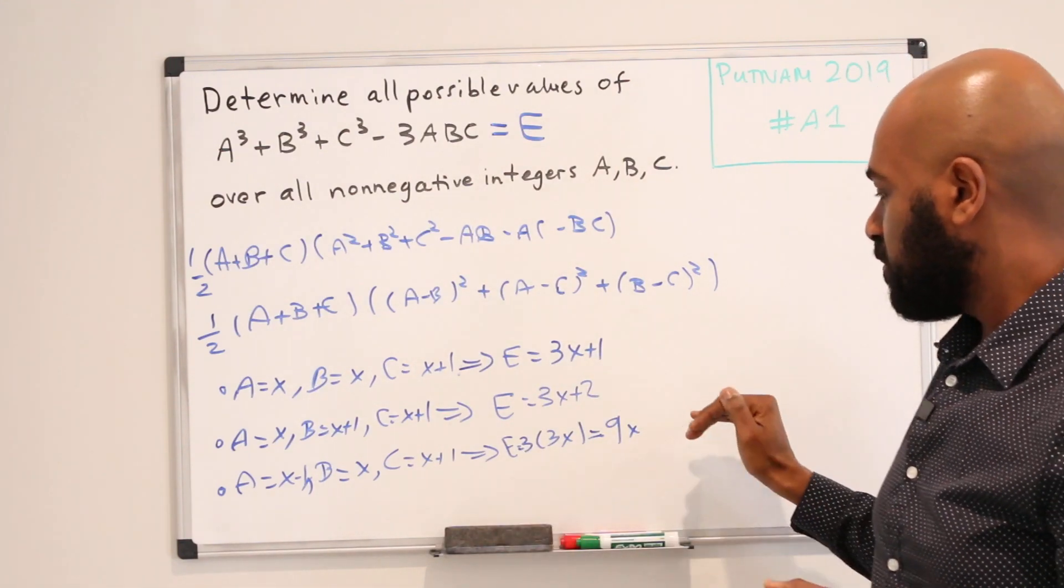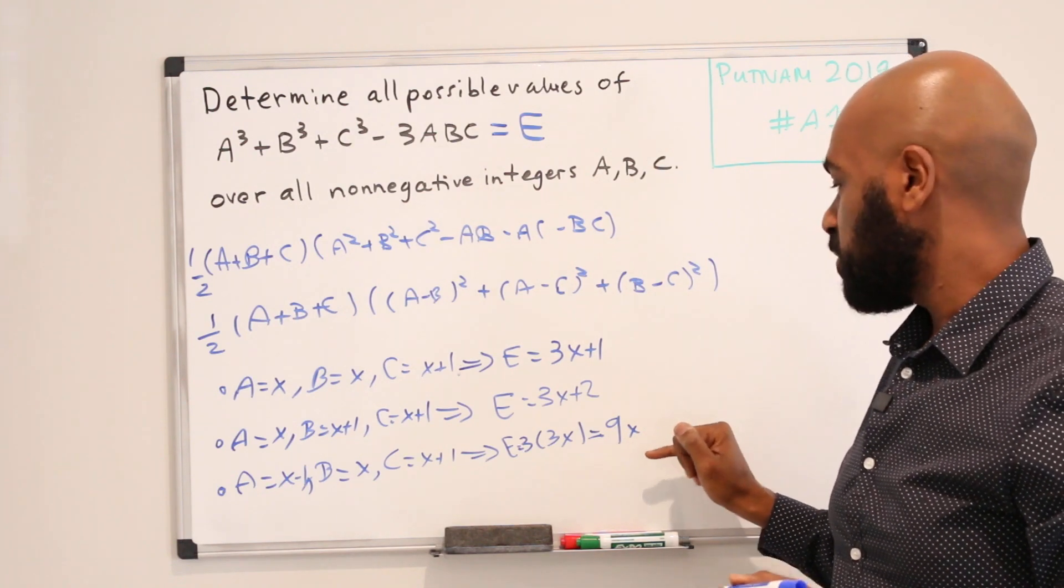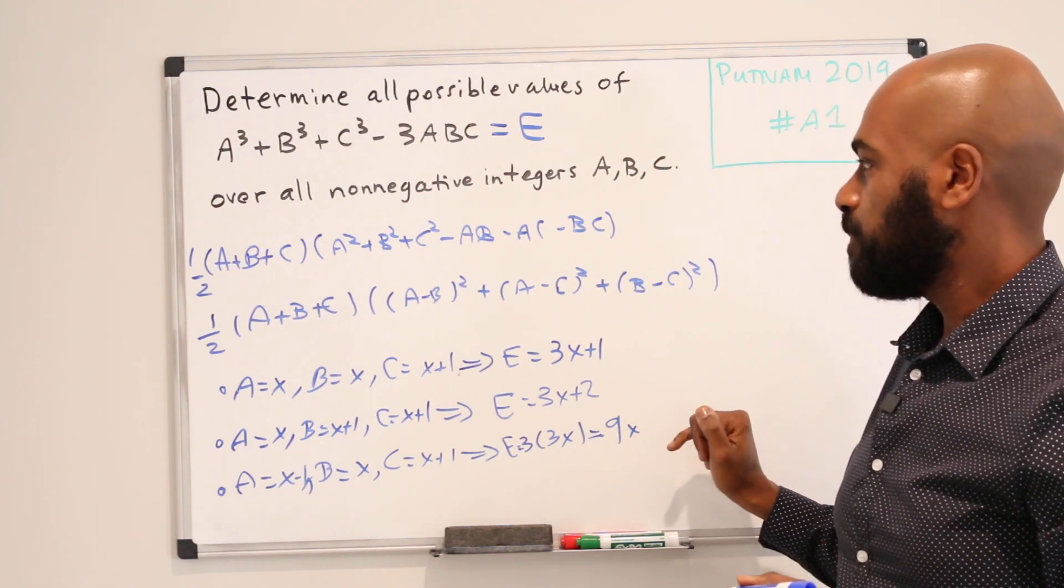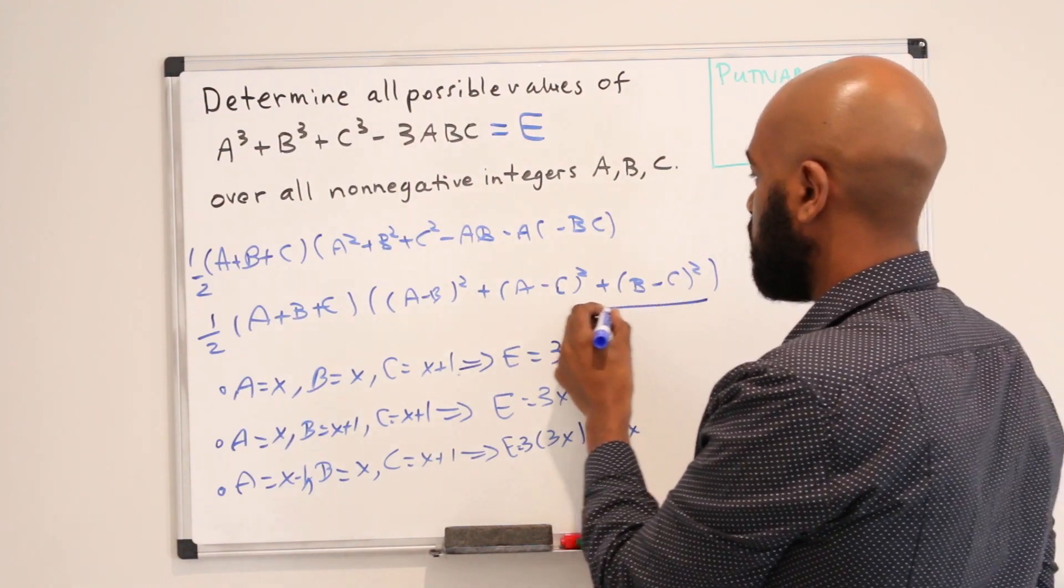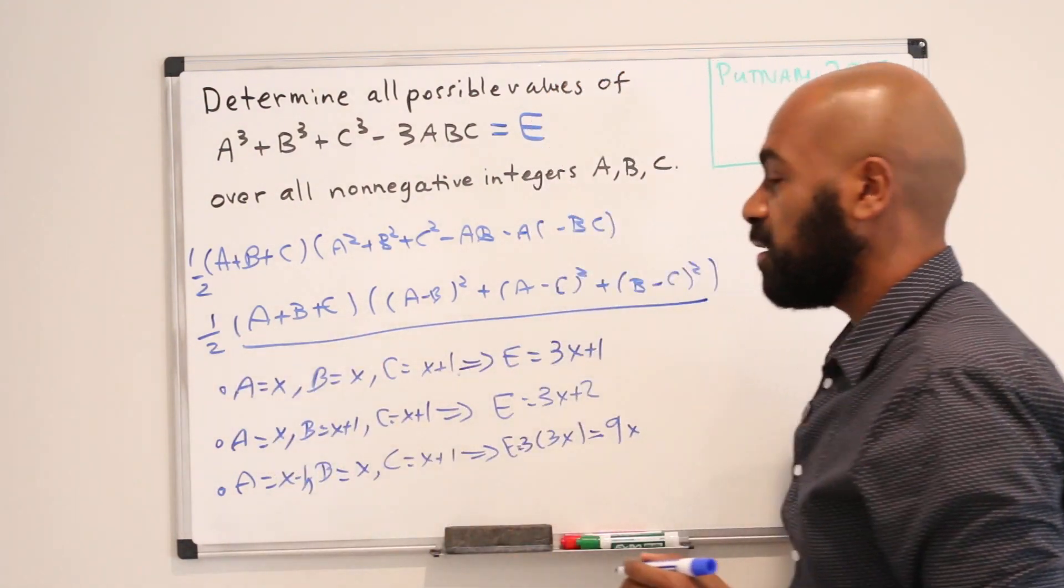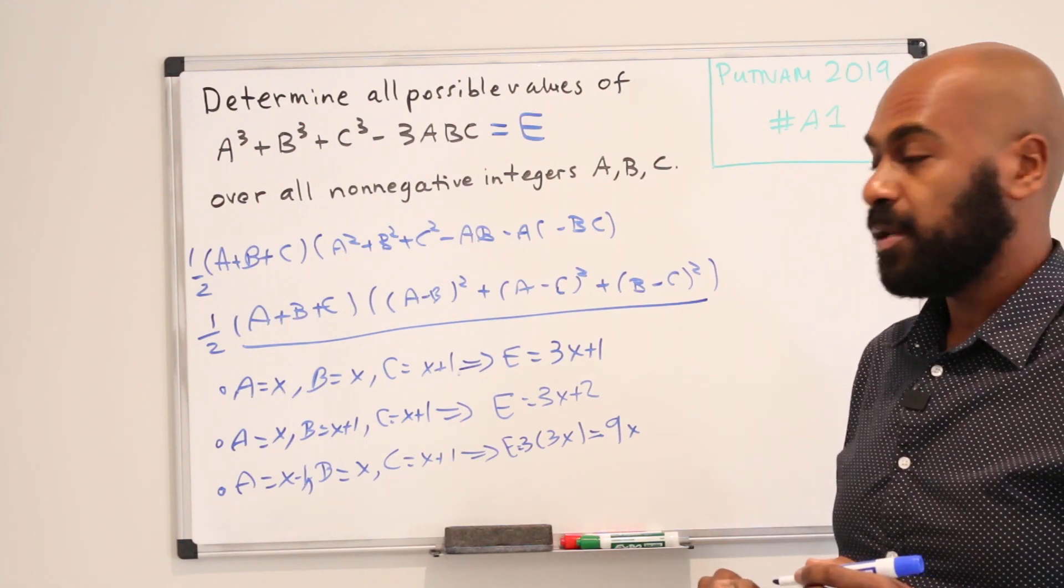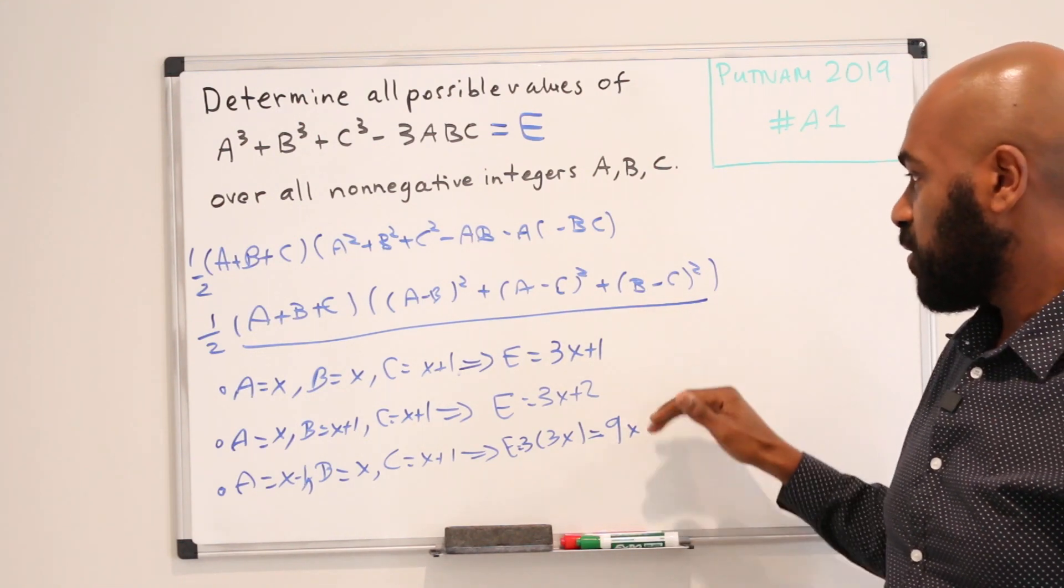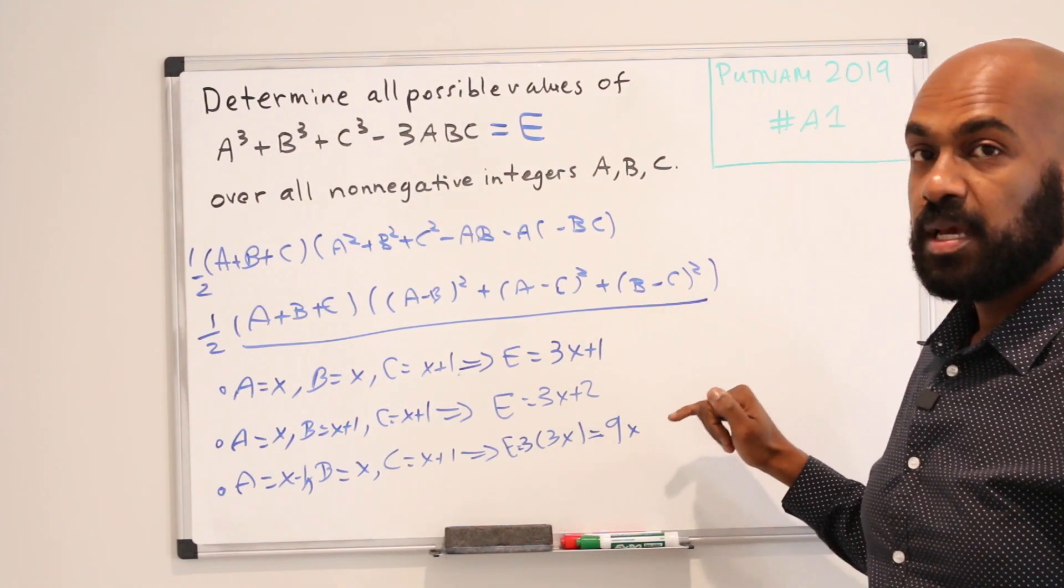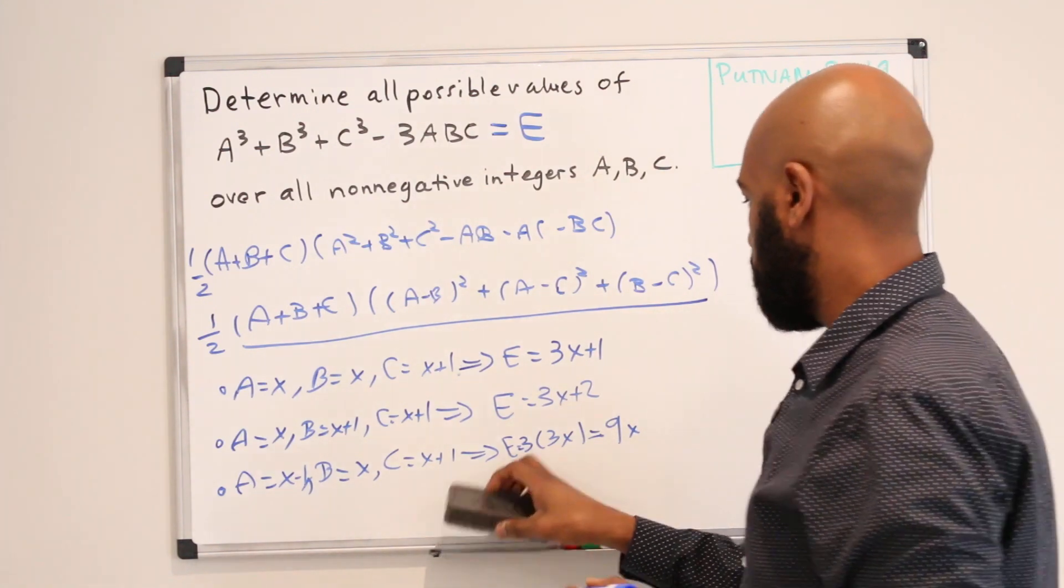Okay, so the thing left to figure out is what happens with multiples of 3 that are not multiples of 9. And what we'll show in fact is if this expression E is a multiple of 3, then it's forced to be a multiple of 9. And so all we get is these numbers right here, things that are not multiples of 3 and multiples of 9.